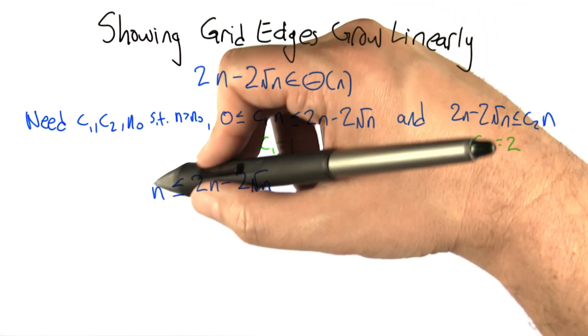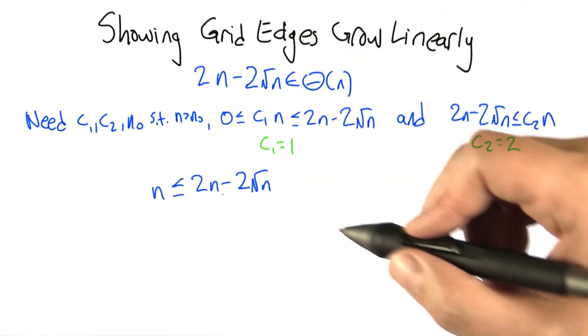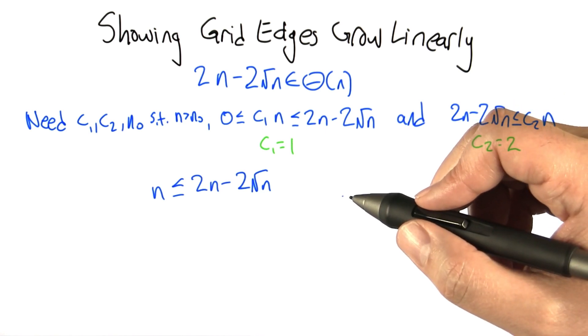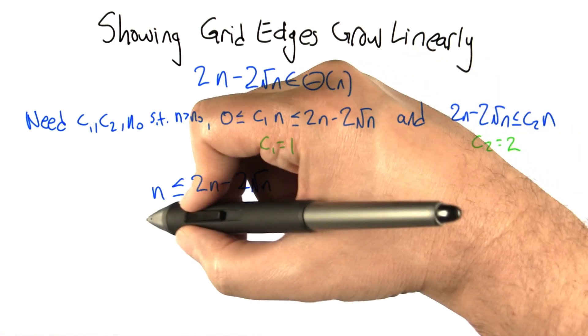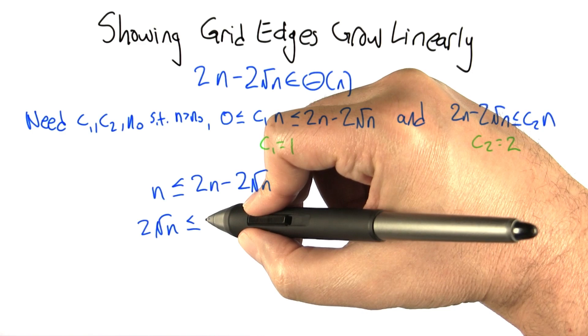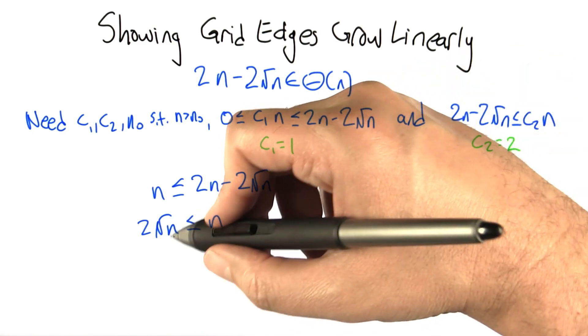For what values of n is that going to be true? Not true of all of them, but it's true of some of them. We can add 2√n to both sides and subtract n from both sides. We get that. If we divide through by √n,